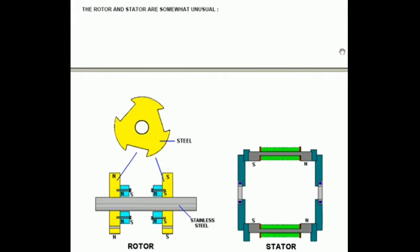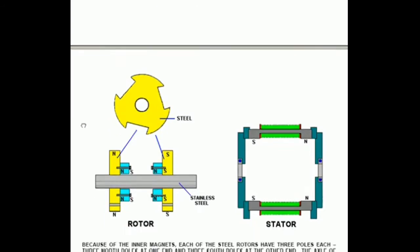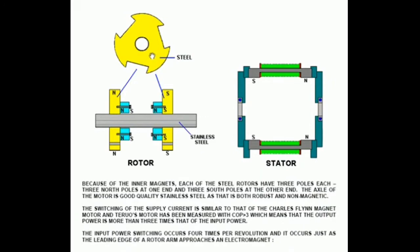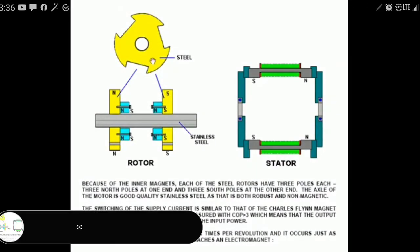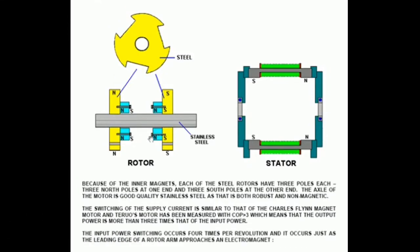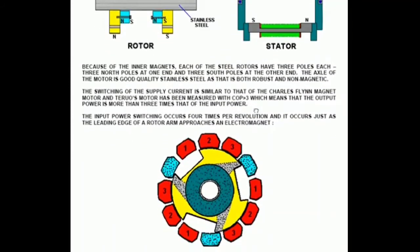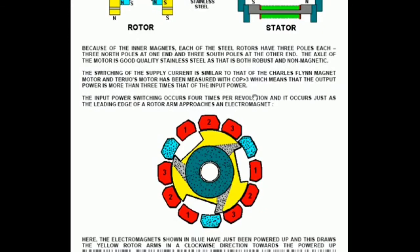But anyway, coming back to this particular motor here the steel rotor is made of two of these shaped pieces shown here in yellow and you see the orientation of the permanent magnets bolted to it. North is facing the steel rotor and south is facing away from it. The actual arrangement is that the coils themselves are wound between the two end-supporting pieces of this particular arrangement. Because each of the inner magnets are attached to steel rotors which are three poles each you get three north poles at one end and three south poles at the other end. The axle of the motor is good quality stainless steel and as that is both robust and non-magnetic it works very well.